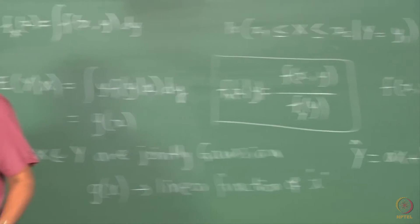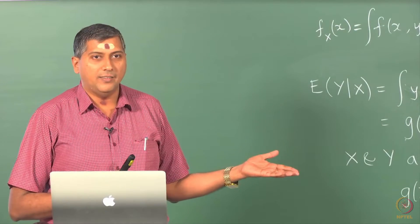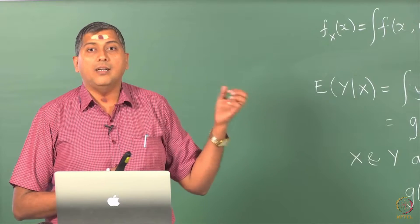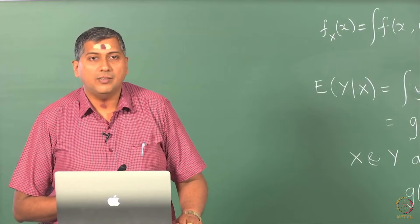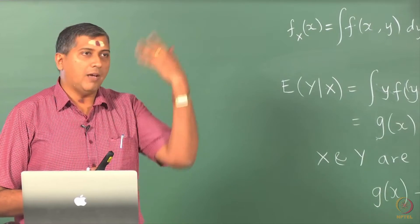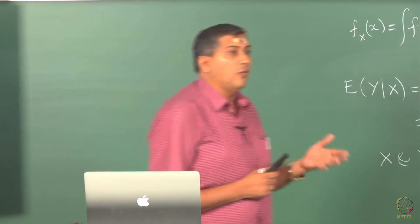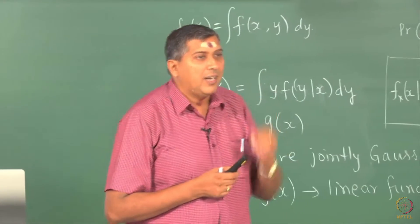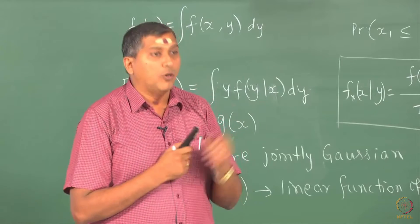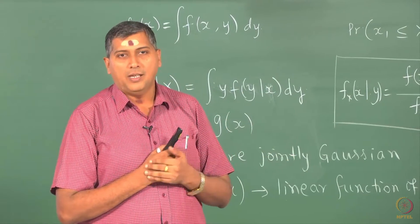It is a fairly easy thing to show. You start with the joint Gaussian density function and start evaluating the conditional density, conditional expectation and then use a small trick and show that the conditional expectation is a linear function of x. In general, g(x) is non-linear. Look at it this way. We decide in general that given an opportunity, I would like to work with linear models regardless of whether x and y are jointly Gaussian or not. Why? Because of convenience. It is easy to work with linear models, easy to estimate them, easy to analyze them.